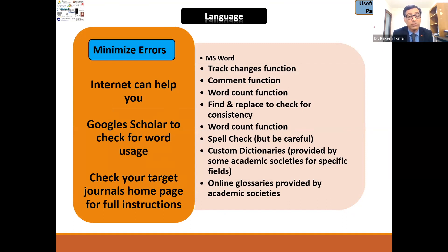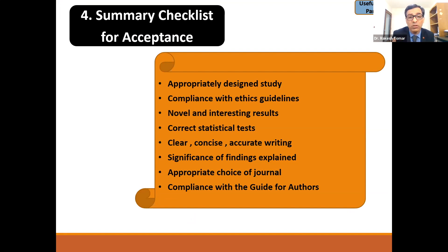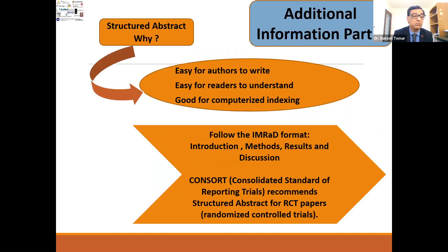Spelling check is important, but be very careful with auto spell check. You can also use custom dictionaries in MS Word. Then there is a summary checklist for acceptance: appropriately designed study, compliance with ethical guidelines, novel and interesting results, correct statistical techniques, clear and concise and accurate writing, significance of findings explained, appropriate choice of journal, and compliance with the guide for authors. Then you send your manuscript.